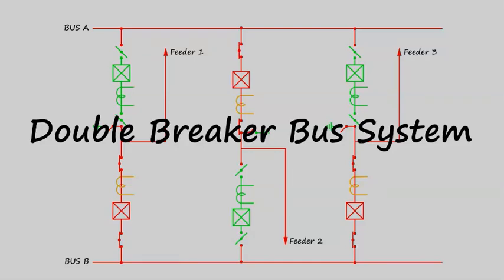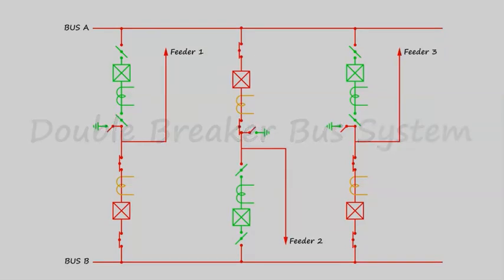Double breaker bus bar system. In double breaker bus bar system, each feeder has two circuit breakers. One circuit breaker is associated with one bus, another circuit breaker is associated with another bus, and each feeder can be diverted to any of the buses.